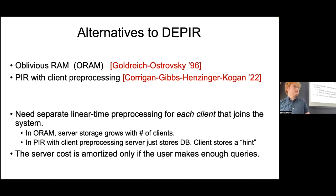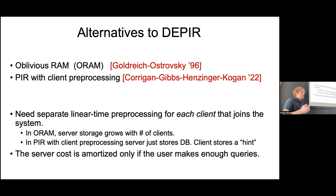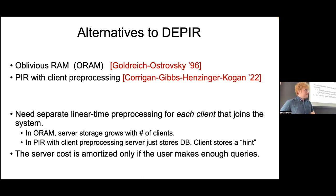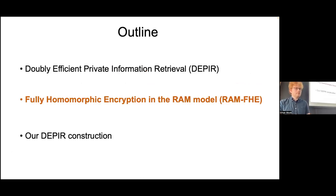Any questions about DPIR before moving on to RAM FHE? There is a question about the trade-off for the parameter epsilon. If you want to make epsilon smaller, it increases the amount of time during the online phase — essentially making epsilon smaller makes your data structure smaller and less useful, so you need to spend more time in the online phase. The exponent of the polylog does depend on epsilon. Moving on to RAM FHE.